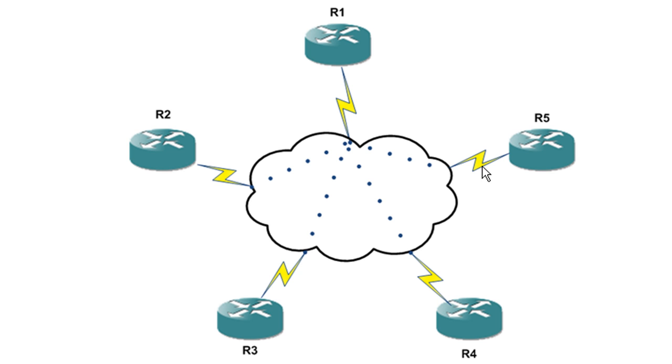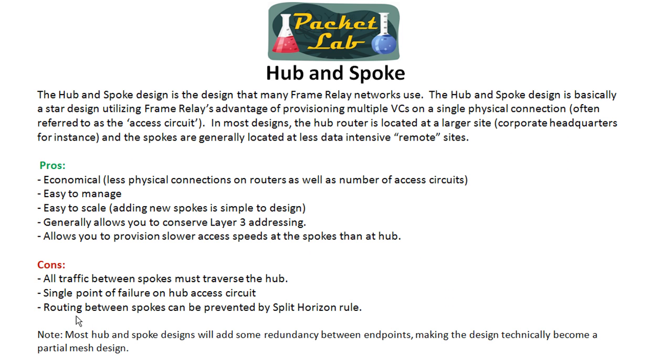That's one of the big downfalls of a hub and spoke design. Whereas if one of the spokes goes down, of course communication to that spoke is down, but the rest of your network is up. And then the final con is that routing between spokes can be prevented by the split horizon rule.